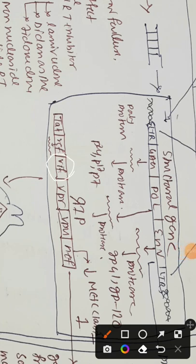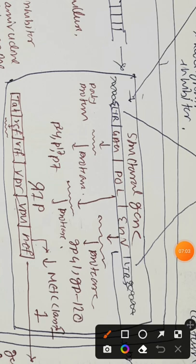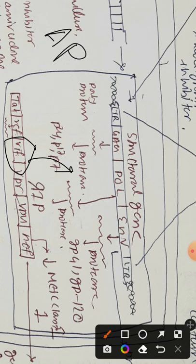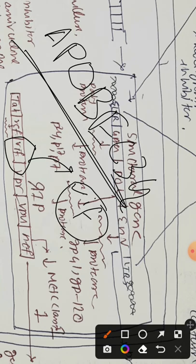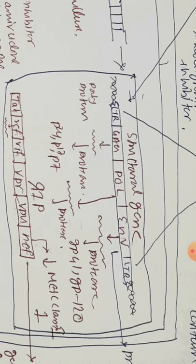Next is VIF, which encodes VIF protein. VIF's function is quite different — instead of helping in transcription, translation, or replication, VIF protects the virus. Whenever a virus enters our cell, a protein called APOBEC3G is activated, and it has the capability to destroy viral DNA. VIF protein destroys APOBEC3G, thereby protecting the viral DNA.